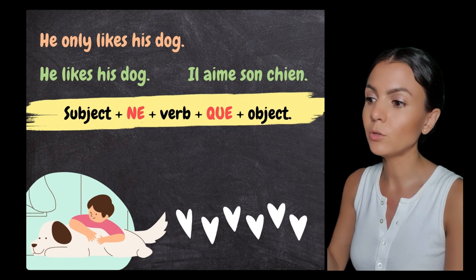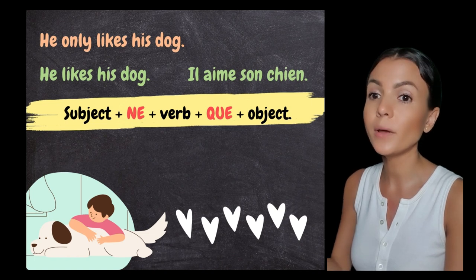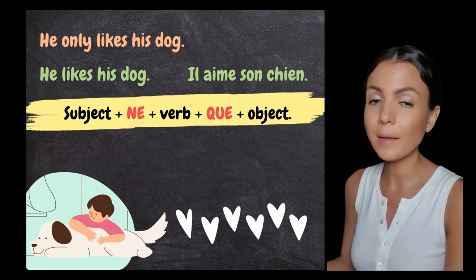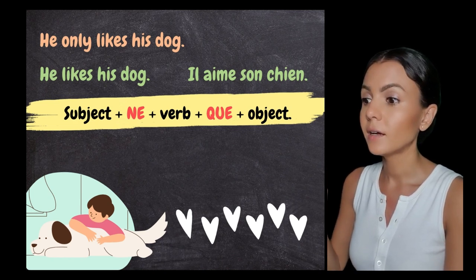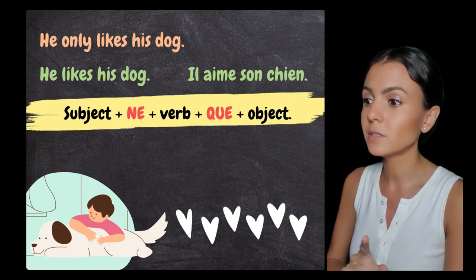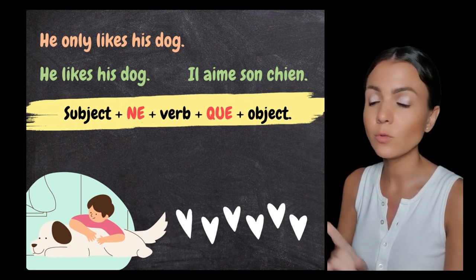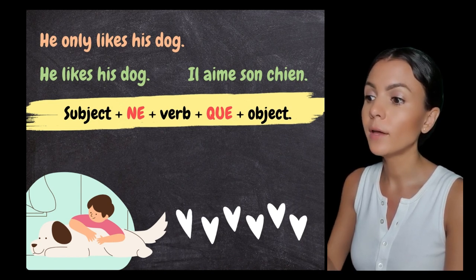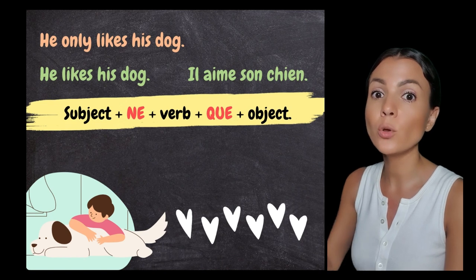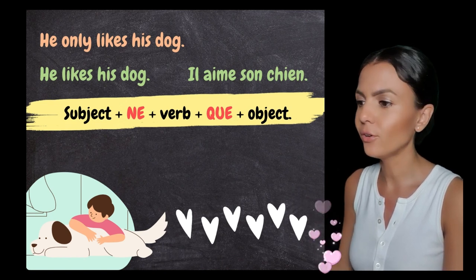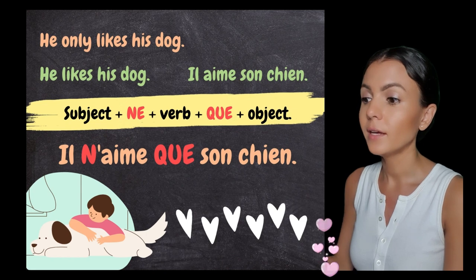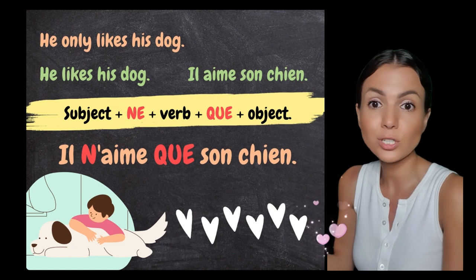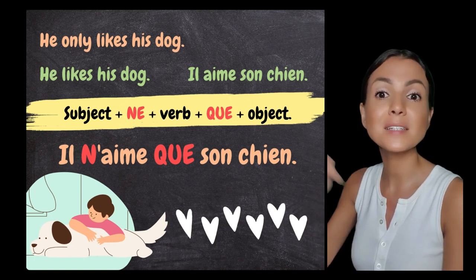Then apply the formula: subject + 'ne' before the verb + 'que' after the verb + the object. This formula is the same as for a negative sentence — 'ne + verb + pas' — but you replace 'pas' with 'que'. So instead of 'il n'aime pas', you say 'il n'aime que son chien' — he only likes his dog.